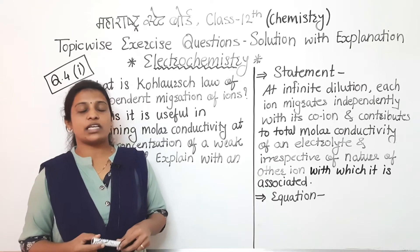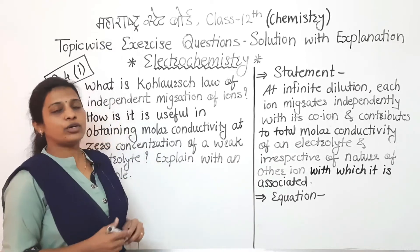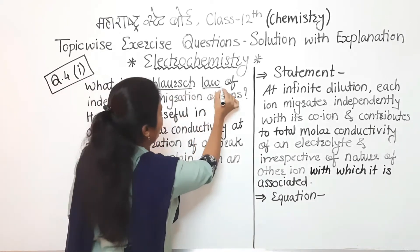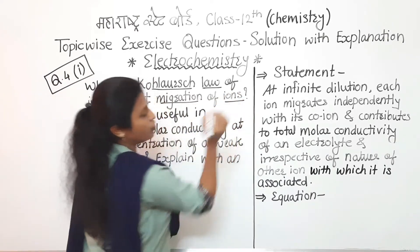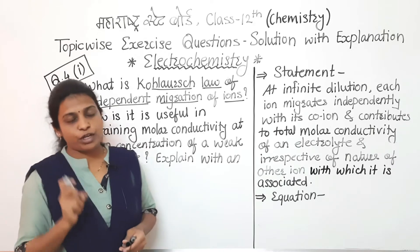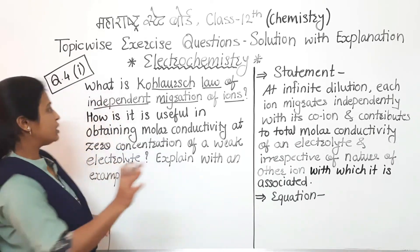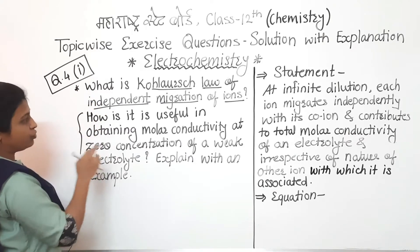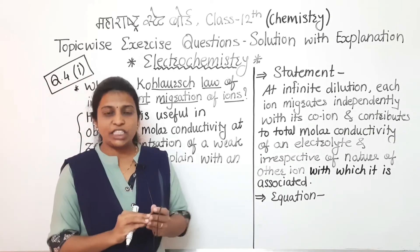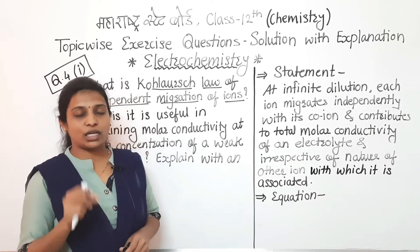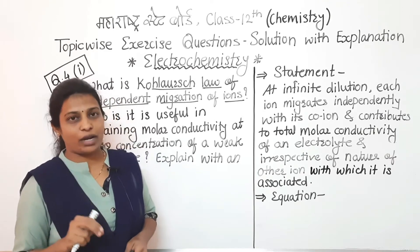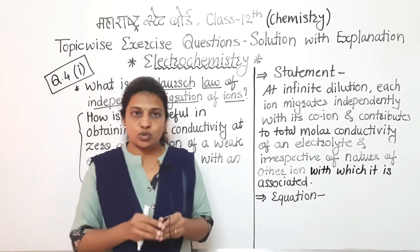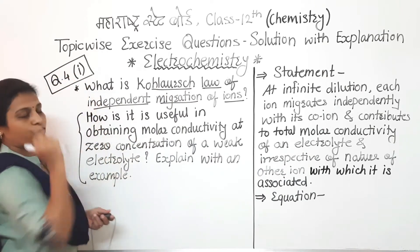Hello friends, in this electrochemistry exercise question with solution, we are going to start question number four. In that question, first we have to write the statement of Kohlrausch's law as well as its formula. For the second half, we have to write one application — calculating the molar conductivity of a weak acid or weak electrolyte — with an example.